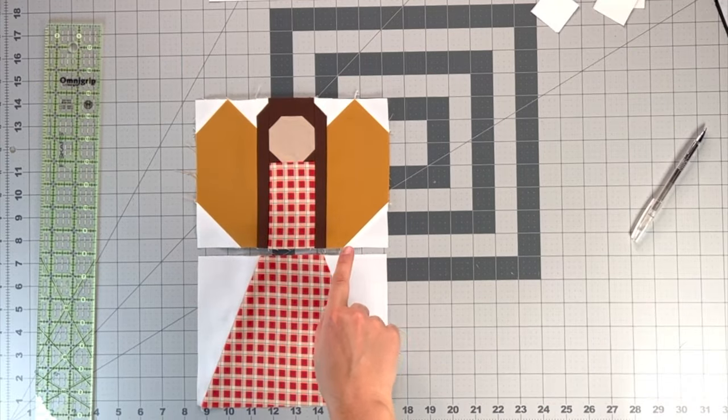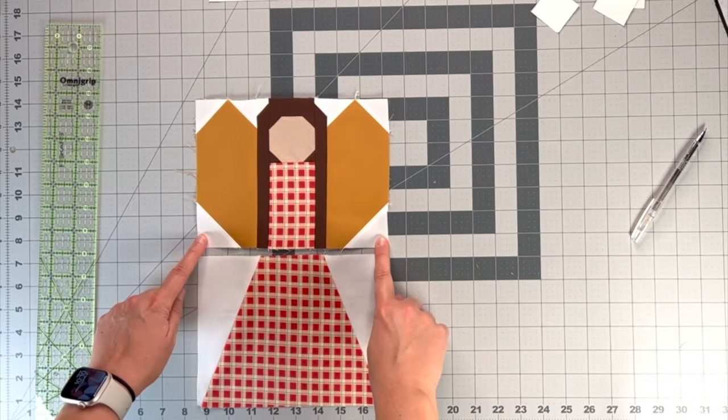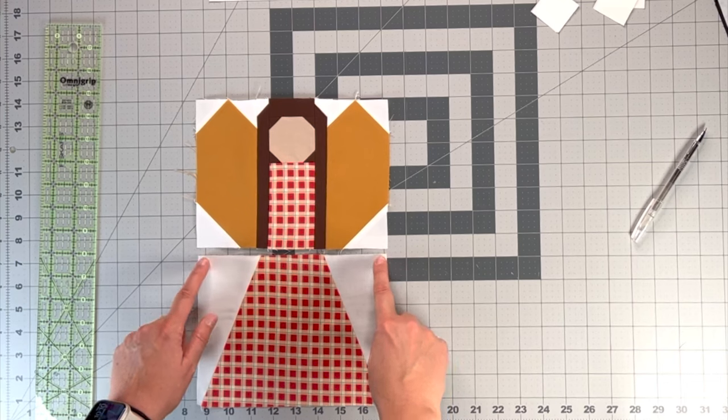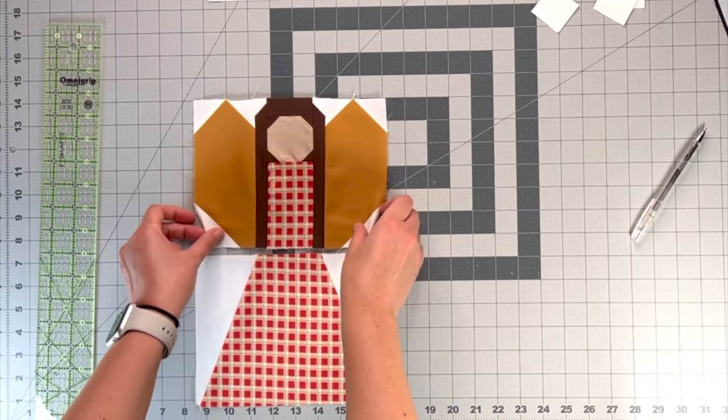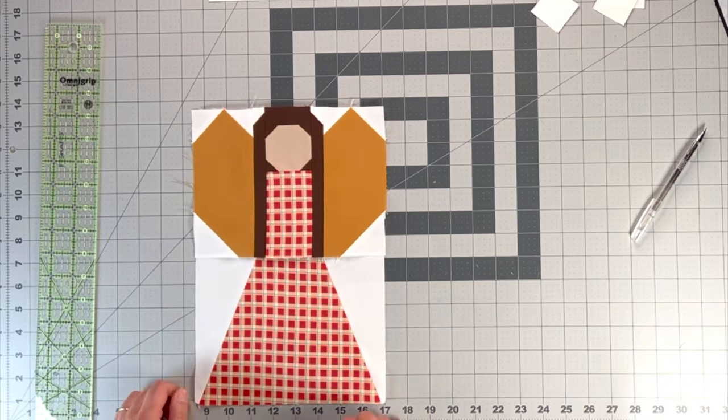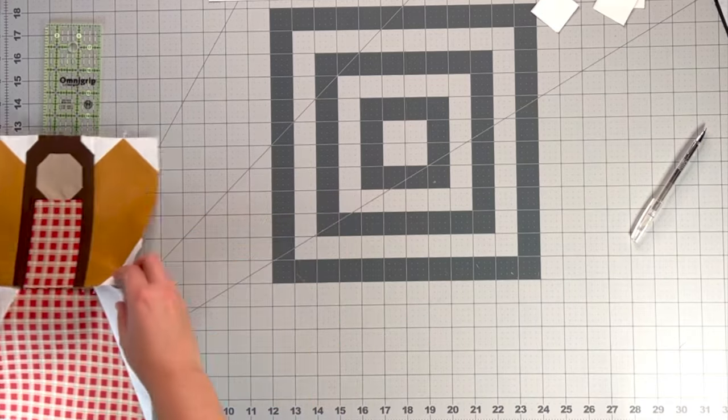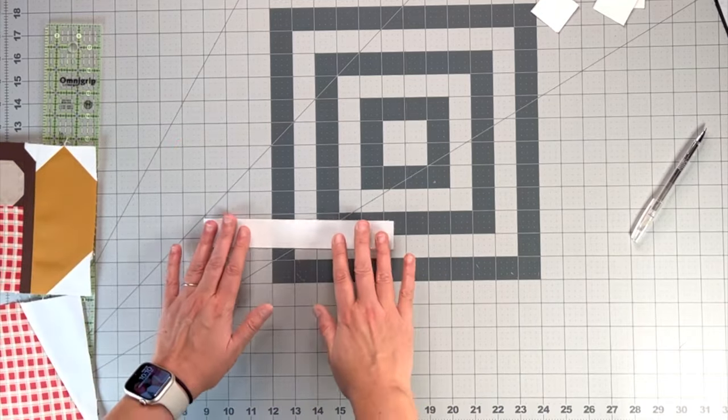Top of the angel is complete. All we're going to do is sew the skirt to the top of the angel, and that block will be complete. And then we will move on to the halo.